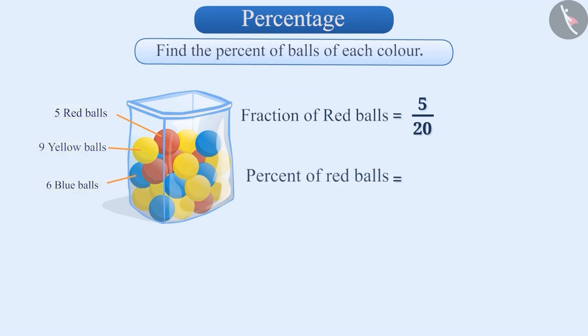First, out of the total balls, let us find the percent of red balls. For this, we will have to convert 5 by 20 fraction into its equivalent fraction whose denominator is 100. Think about how we will do this.